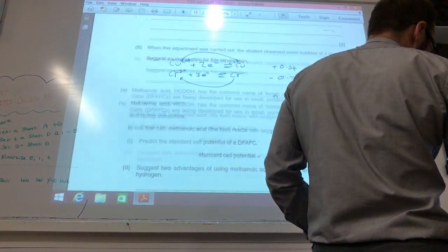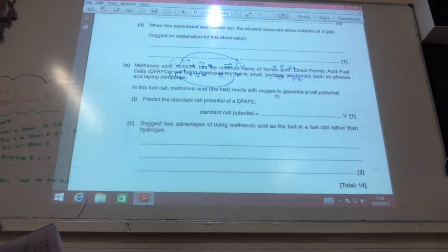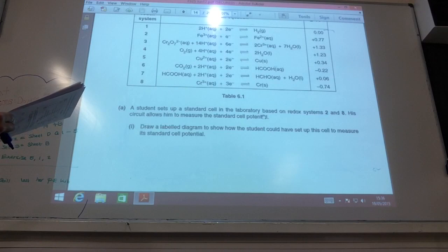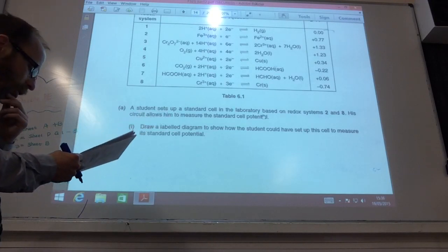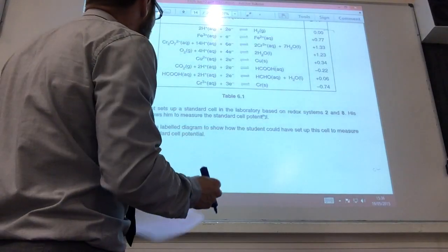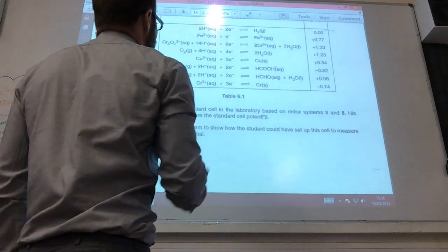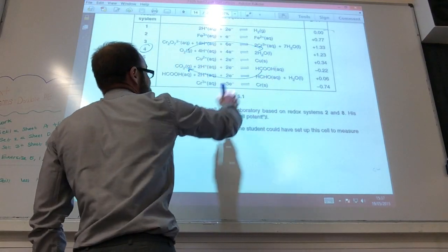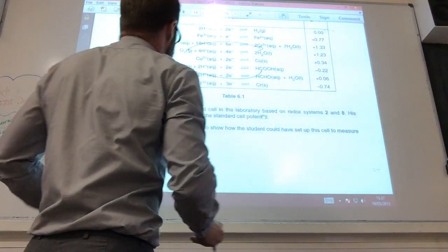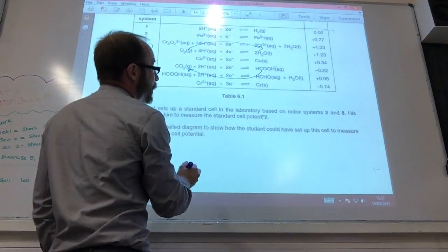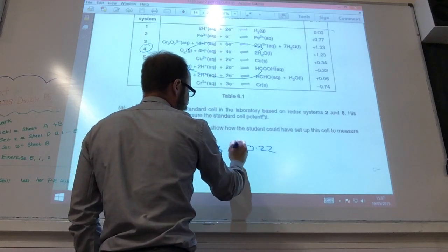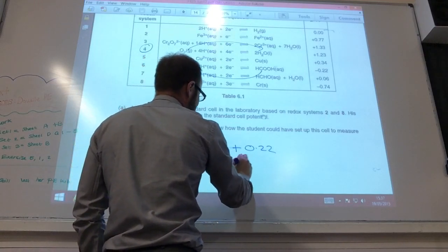And then, just moving on quickly, methanoic acid has a common name, we'll have to go back to the table for that one. Right, so methanoic acid has a common name of formic acid, and we're developing fuel cells based on this. In the fuel cell, methanoic acid, the fuel reacts with oxygen to generate the cell potential, predict what it's going to be. So, oxygen, where have I got oxygen? I've got oxygen in four. So, oxygen gas has got to go that way. It reacts with methanoic acid. Again, it's got to be that one that gets reversed, because that reacts with that to give me that. So, it wants me to give the cell potential. So, it's the difference between 1.23 minus -0.22. So, 1.23 plus 0.22 is 1.45 volts for that.